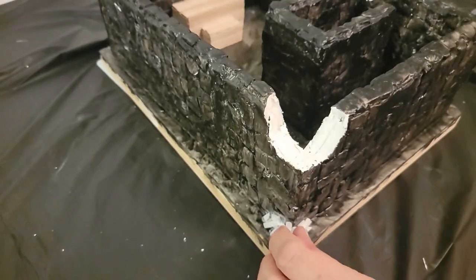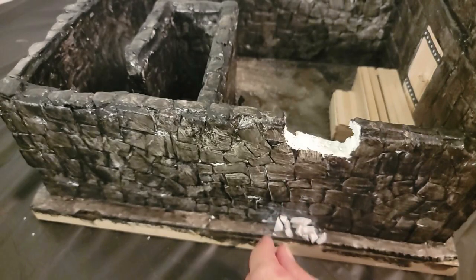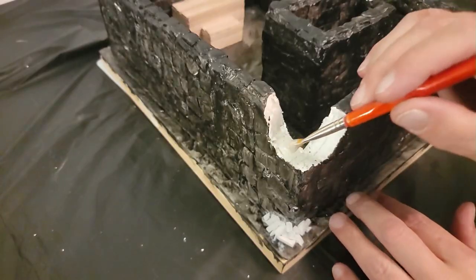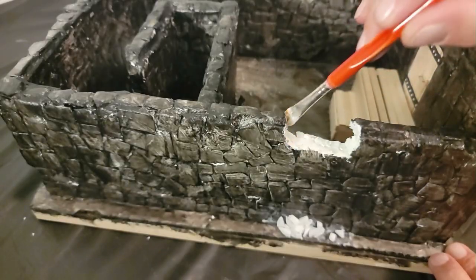I also took some of the scrap foam from when I was cutting the stones and spread them around the base where I made the cuts to look like rubble. I also made sure to add some glue to the parts that were cut out so that they were protected from spray paint.